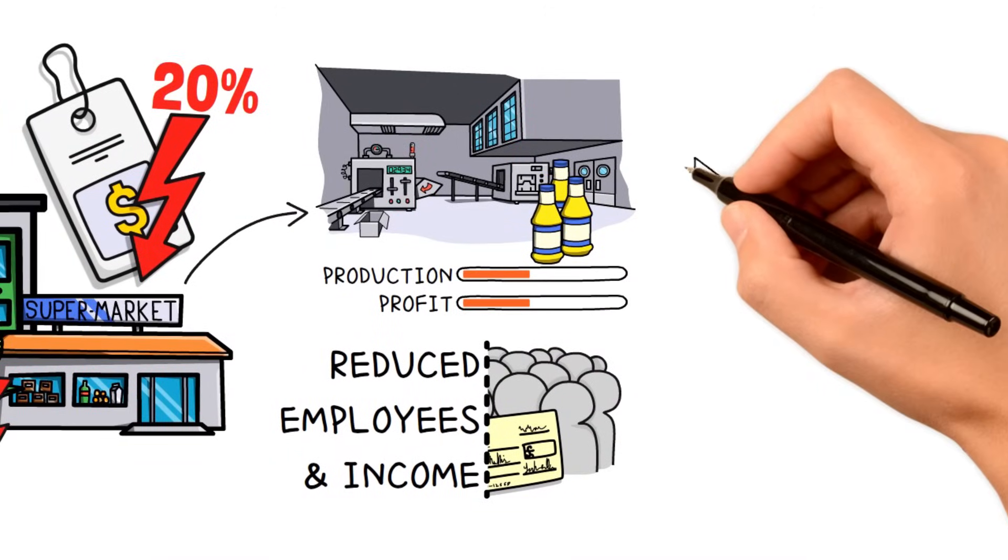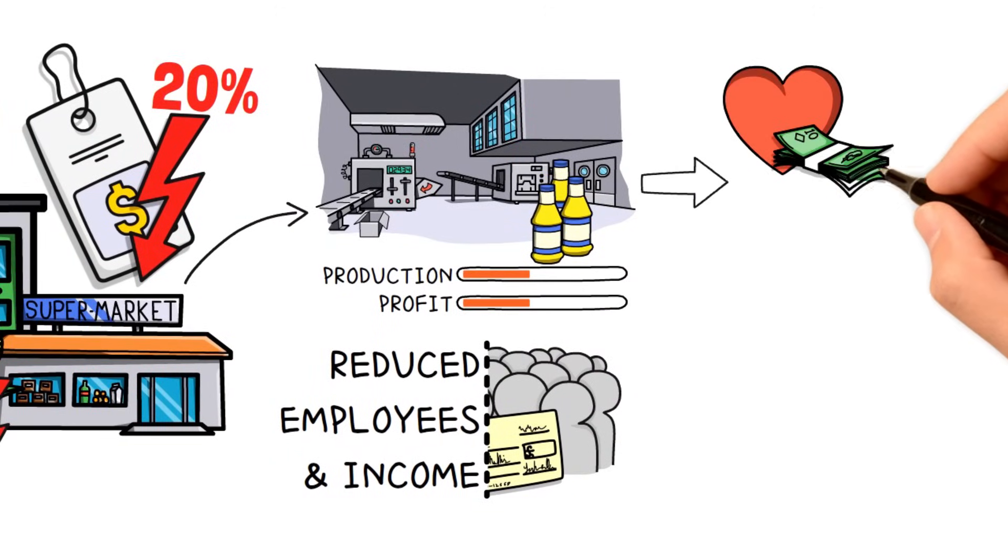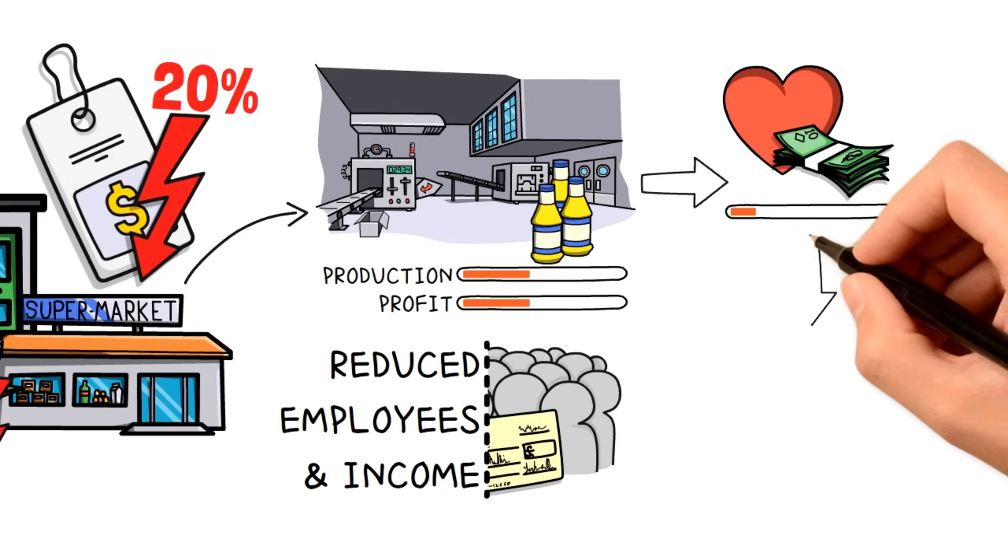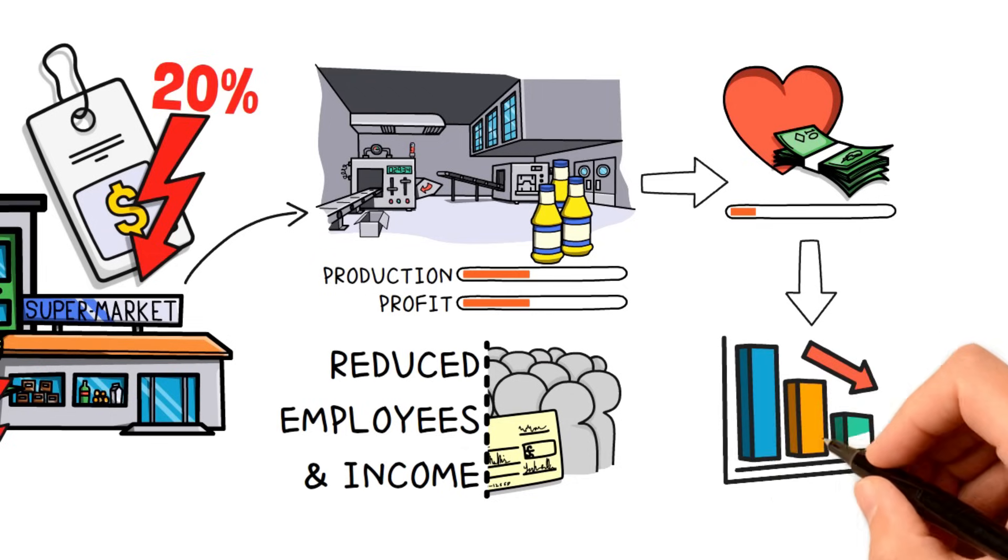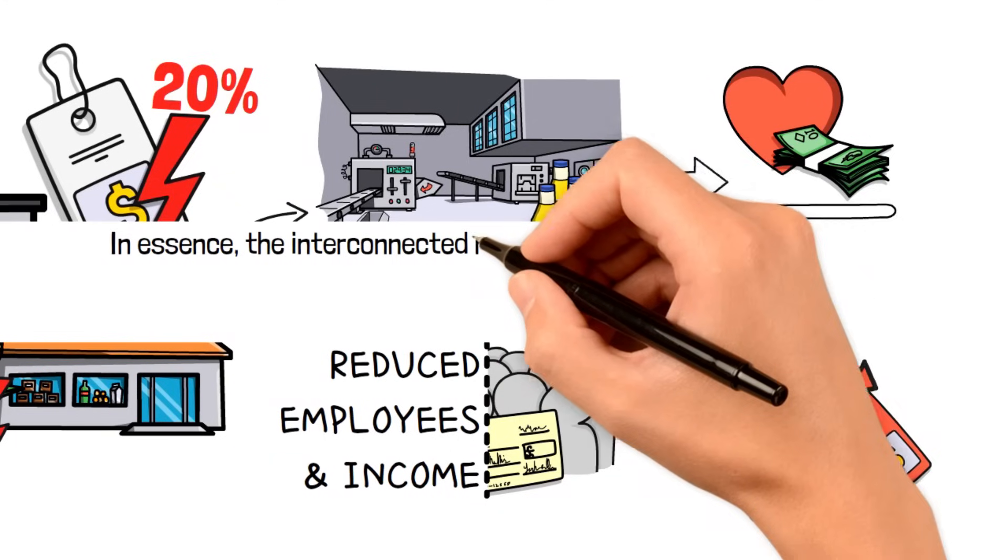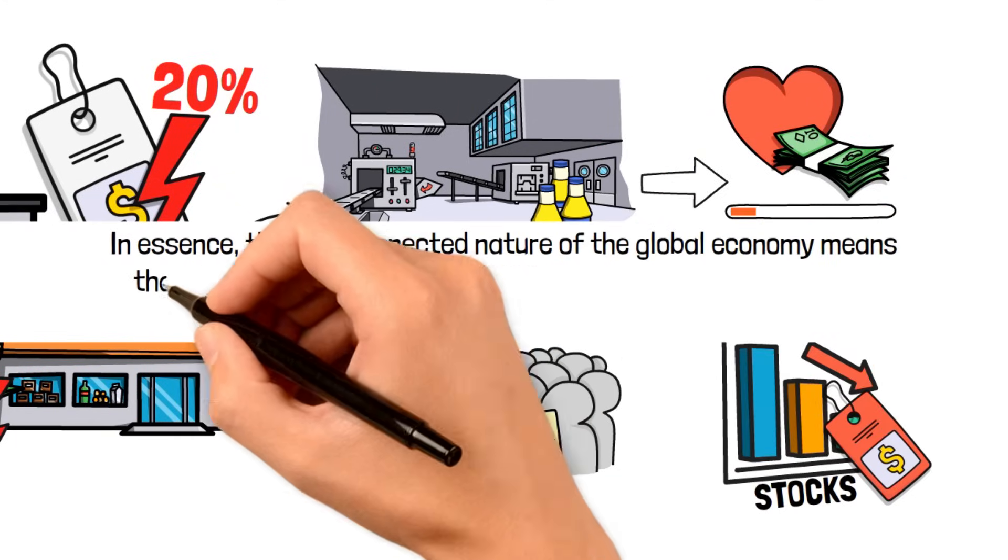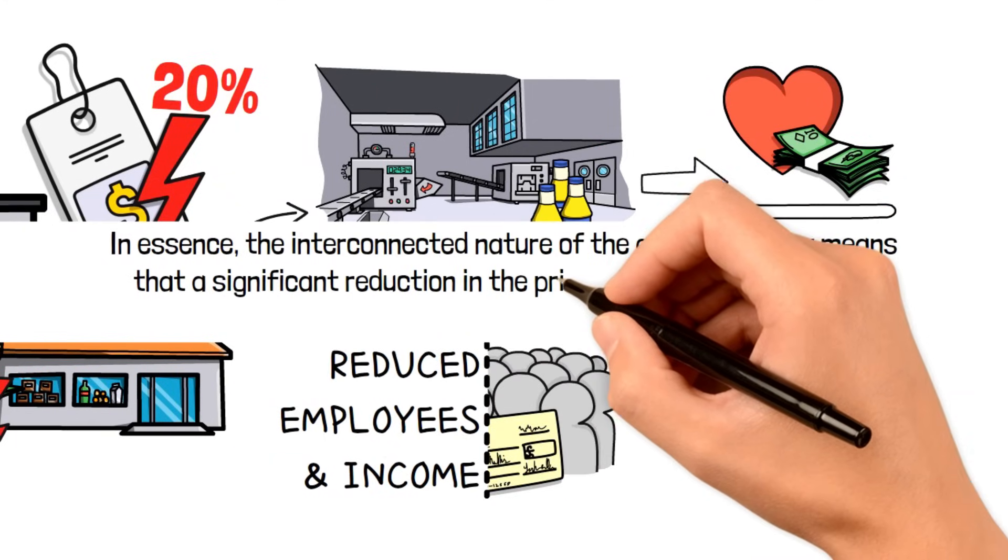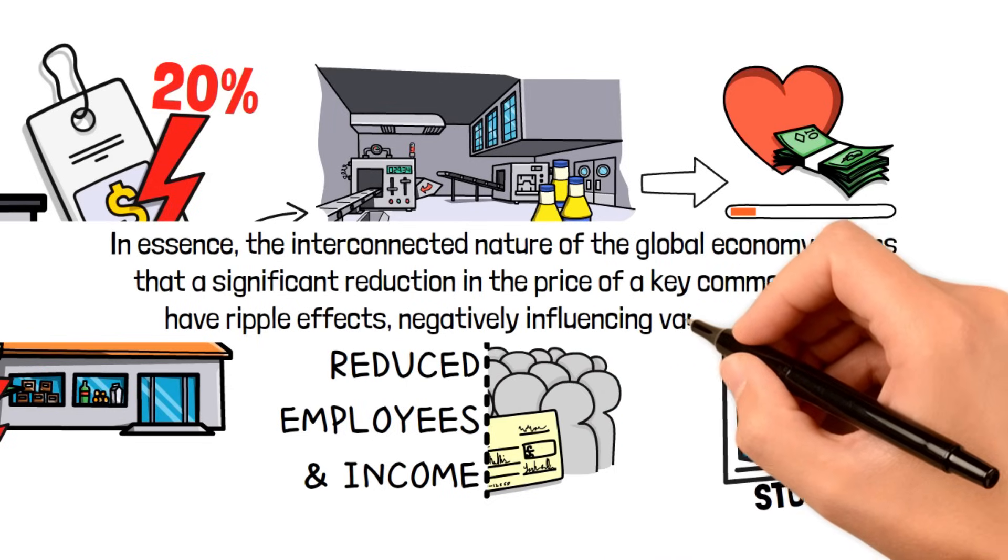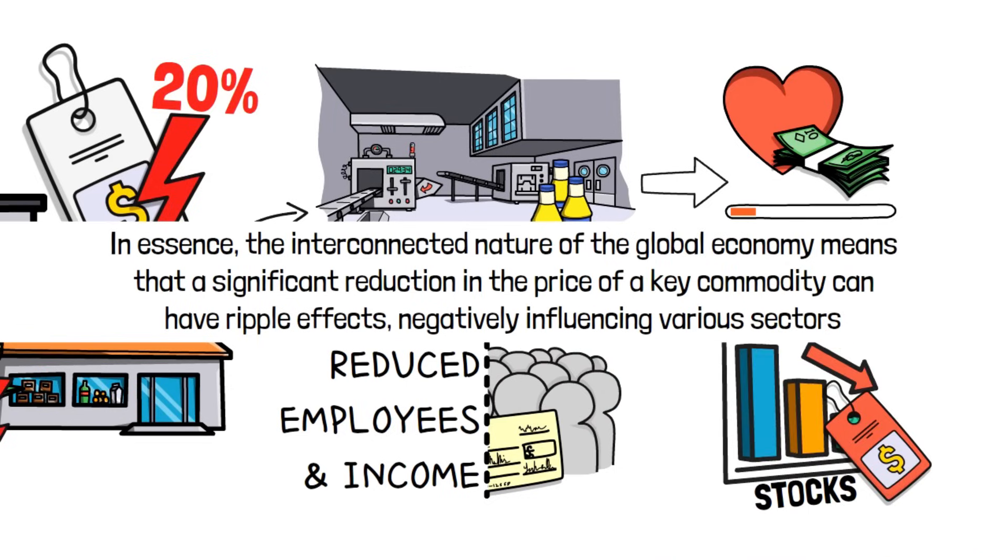Furthermore, a drop in commodity prices can affect the financial health of companies that heavily rely on producing or selling that commodity. This can lead to a decline in stock prices, impacting the overall financial market. In essence, the interconnected nature of the global economy means that a significant reduction in the prices of a key commodity can have ripple effects, negatively influencing various sectors. This collective impact on businesses, employment, and consumer confidence can contribute to an economic downturn or even a recession.